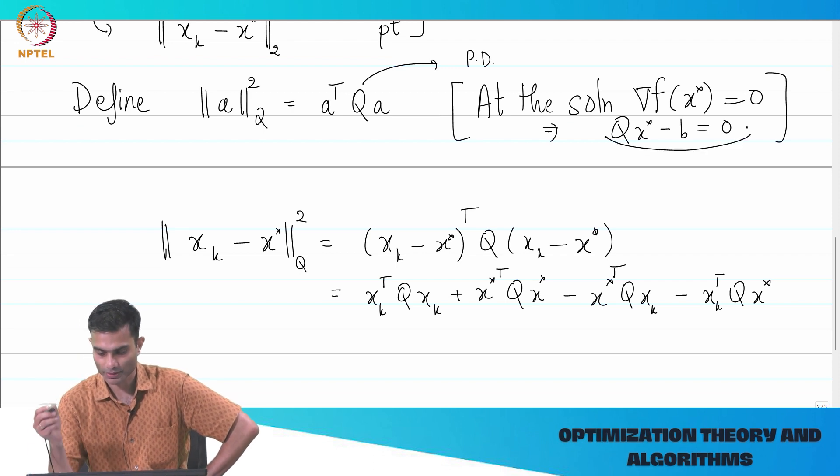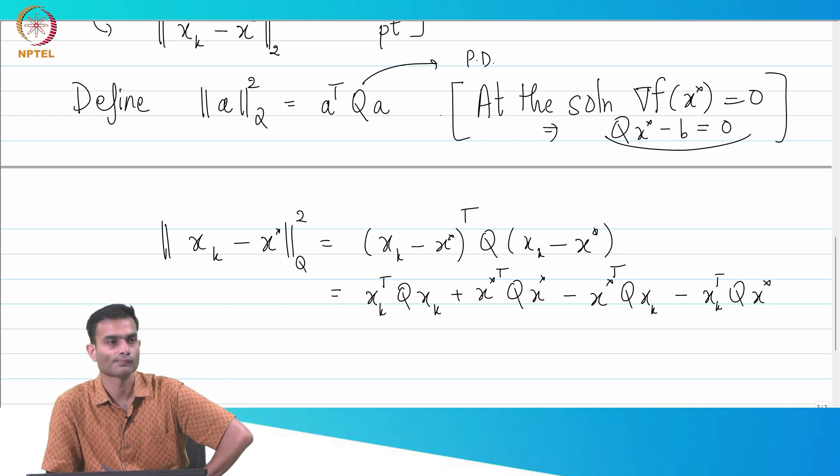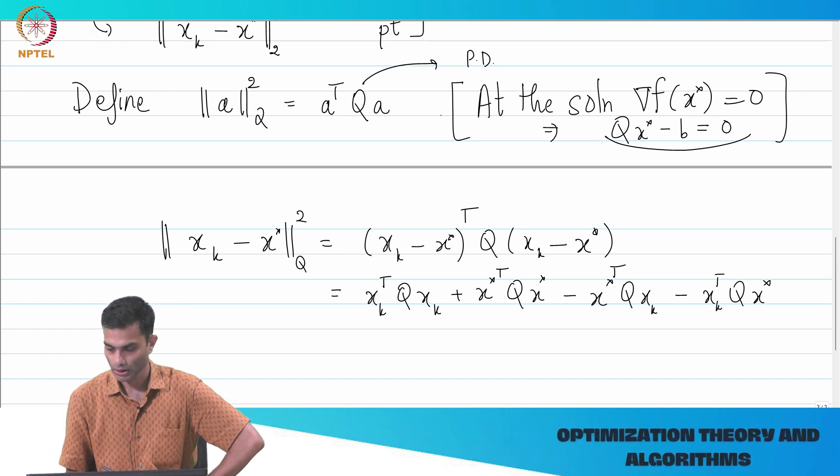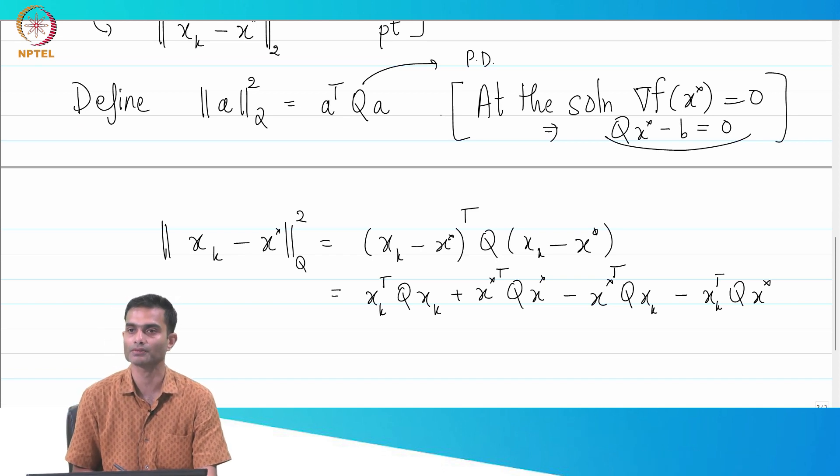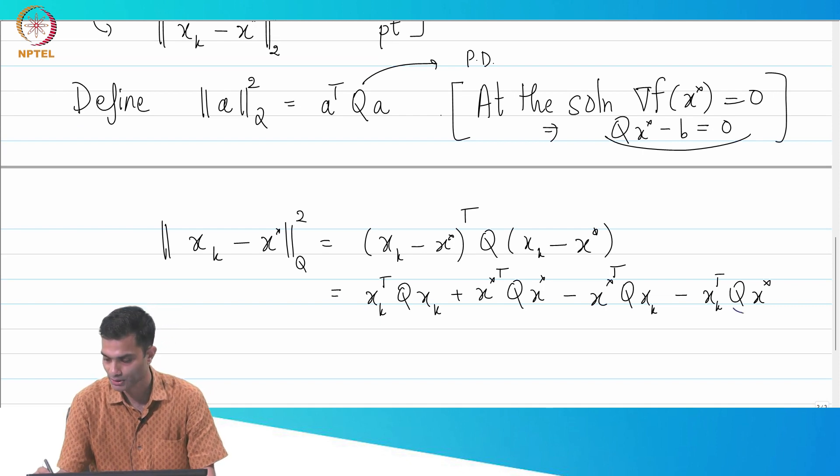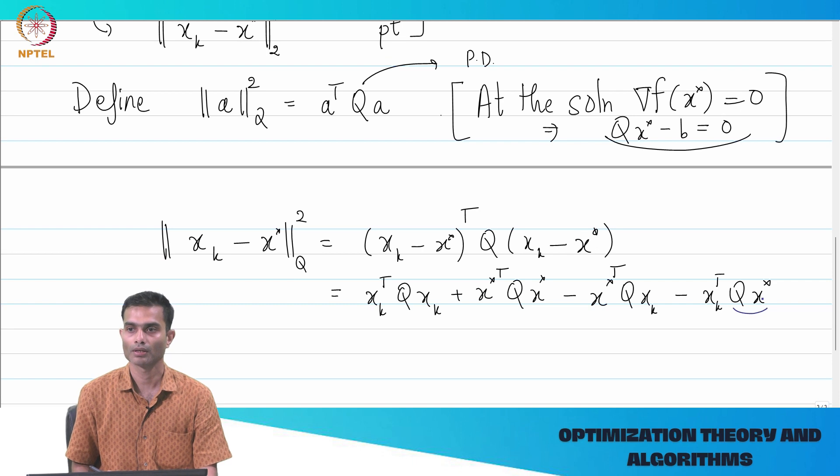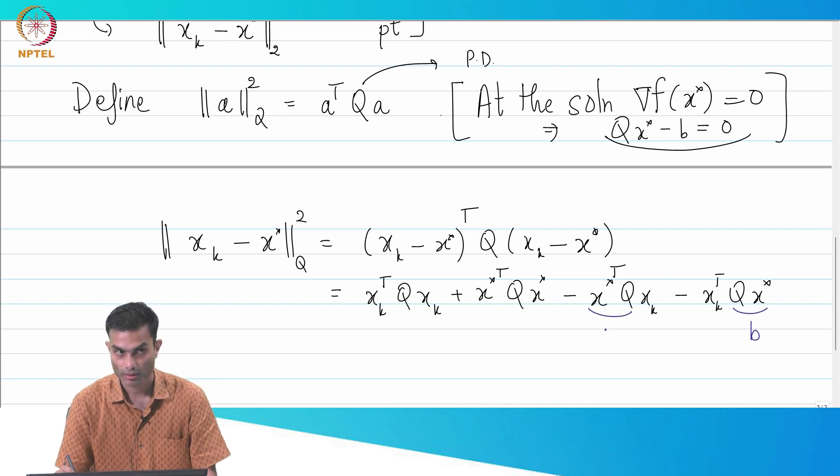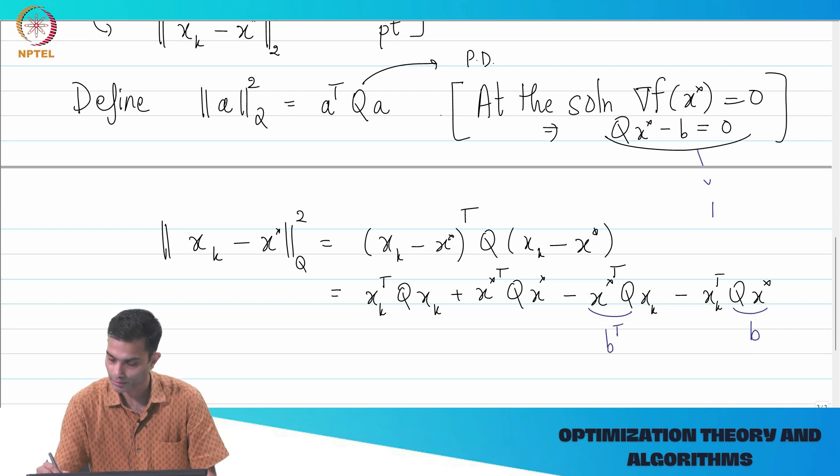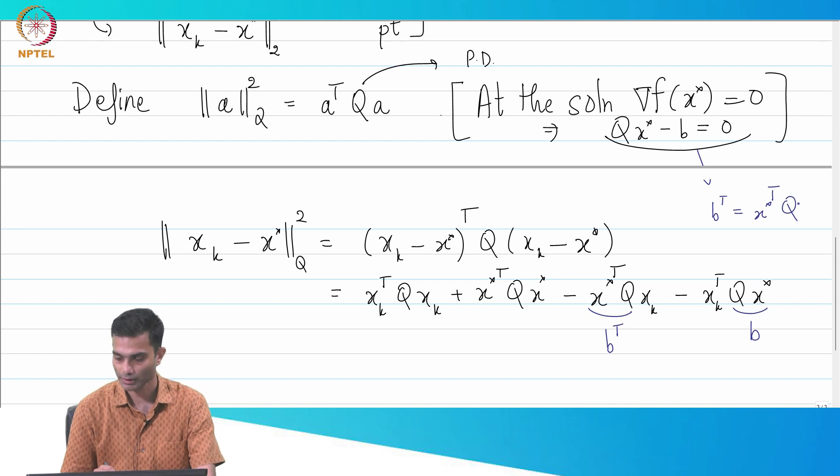Let's explicitly open it up. So x_k transpose Q x_k is one term plus x star transpose Q x star is another term and then I have the cross terms. Let's keep in mind this expression over here. Can I simplify a few of the terms? I have just opened it differently. The first two terms are positive, the next two terms are negative. So do I see a Q x star anywhere in this expression?